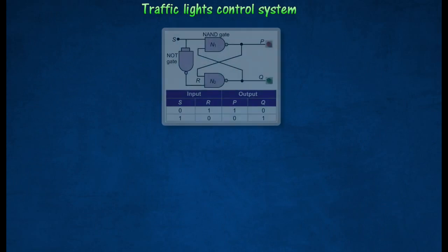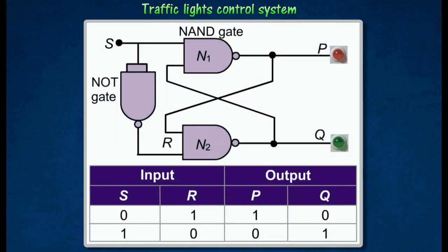Figure shows a model of the traffic lights system built from a flip-flop circuit connected to a NAND gate. The circuit has only one input, S, and two outputs, P and Q. The truth table shows the action of the circuit.